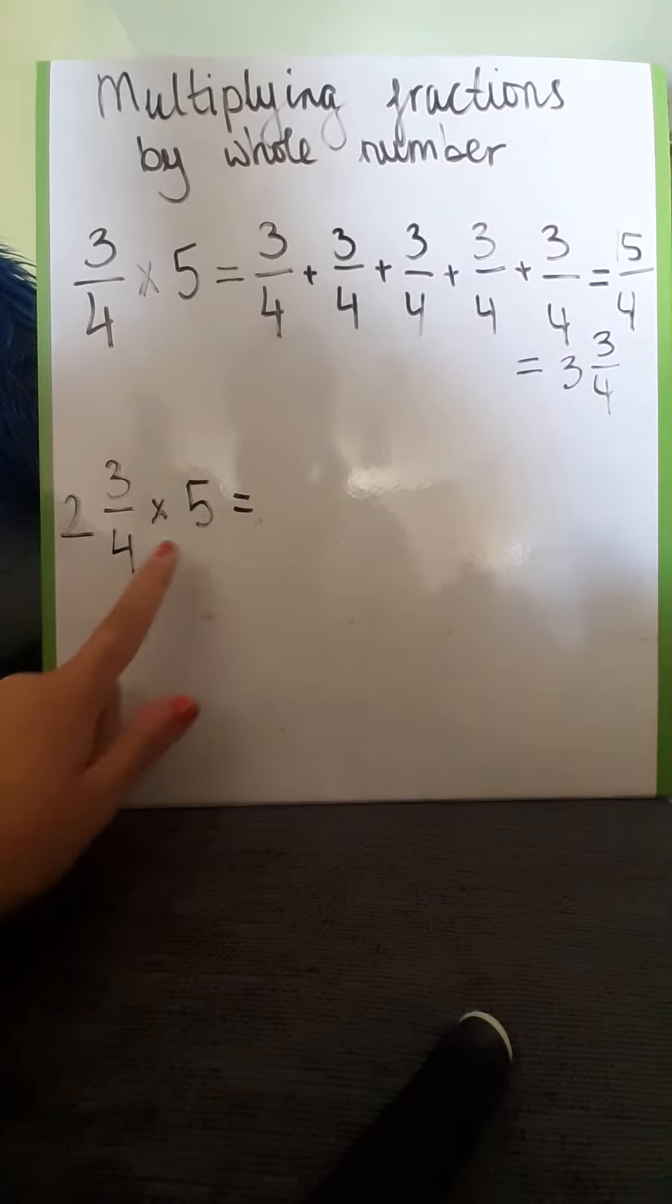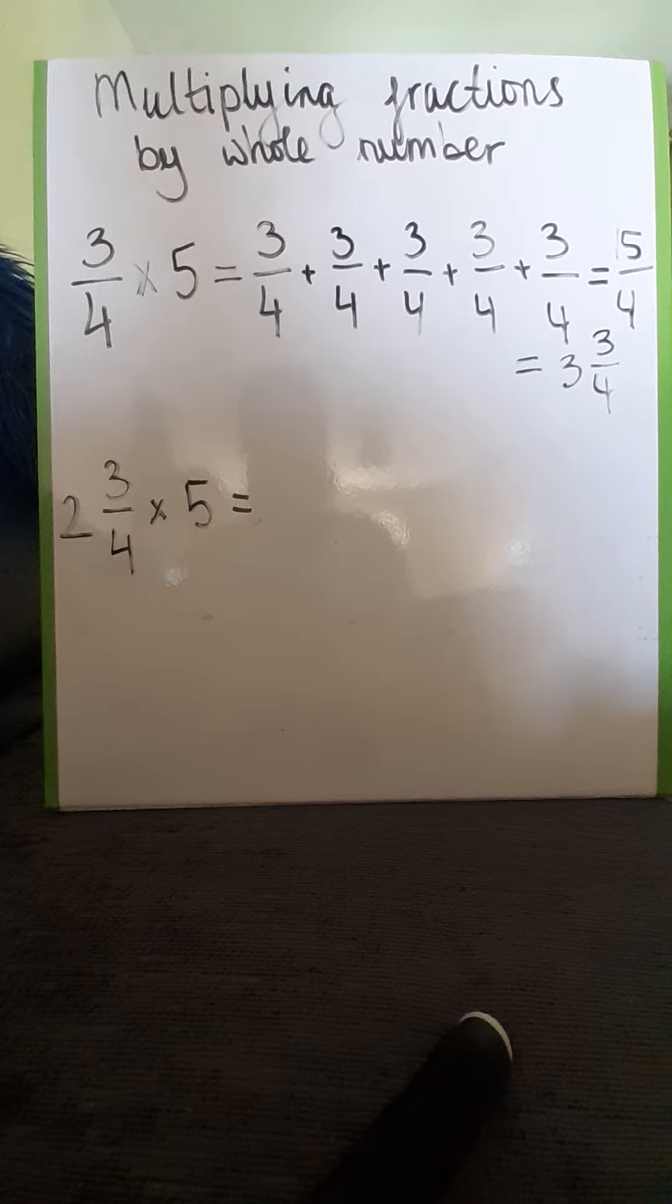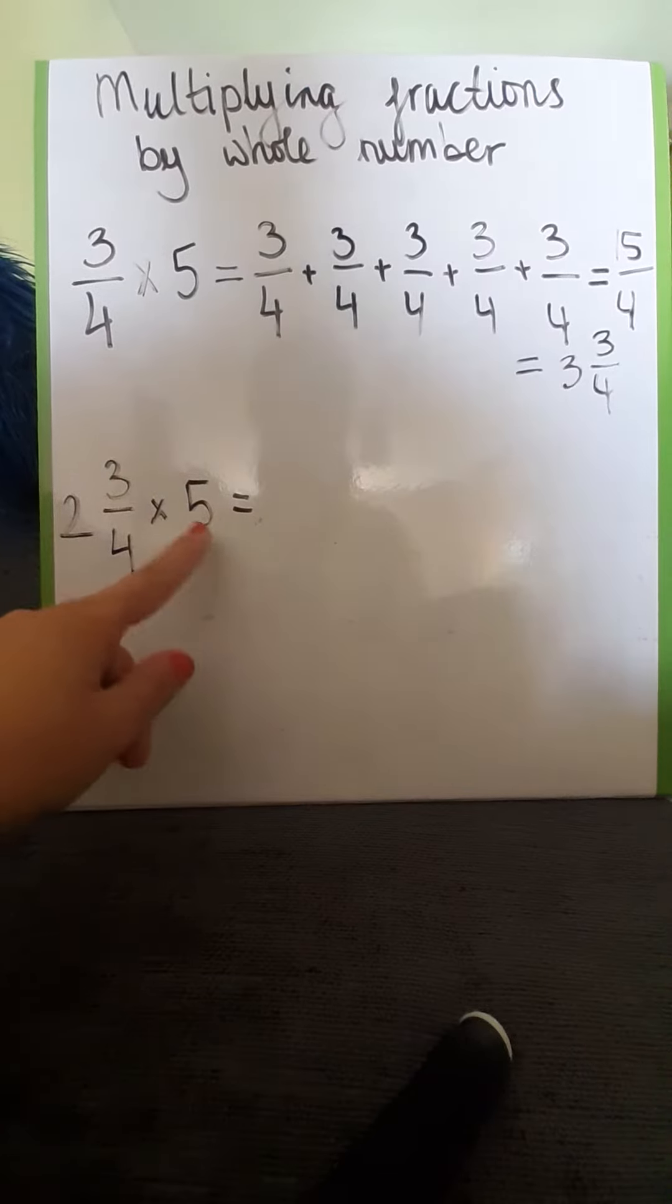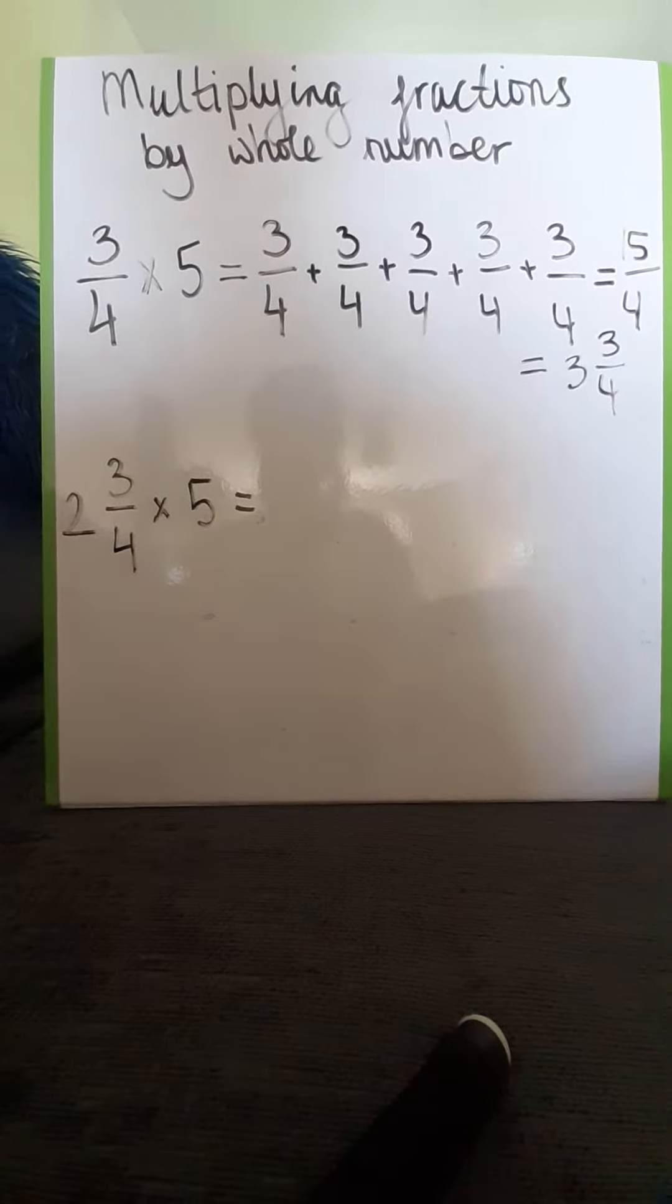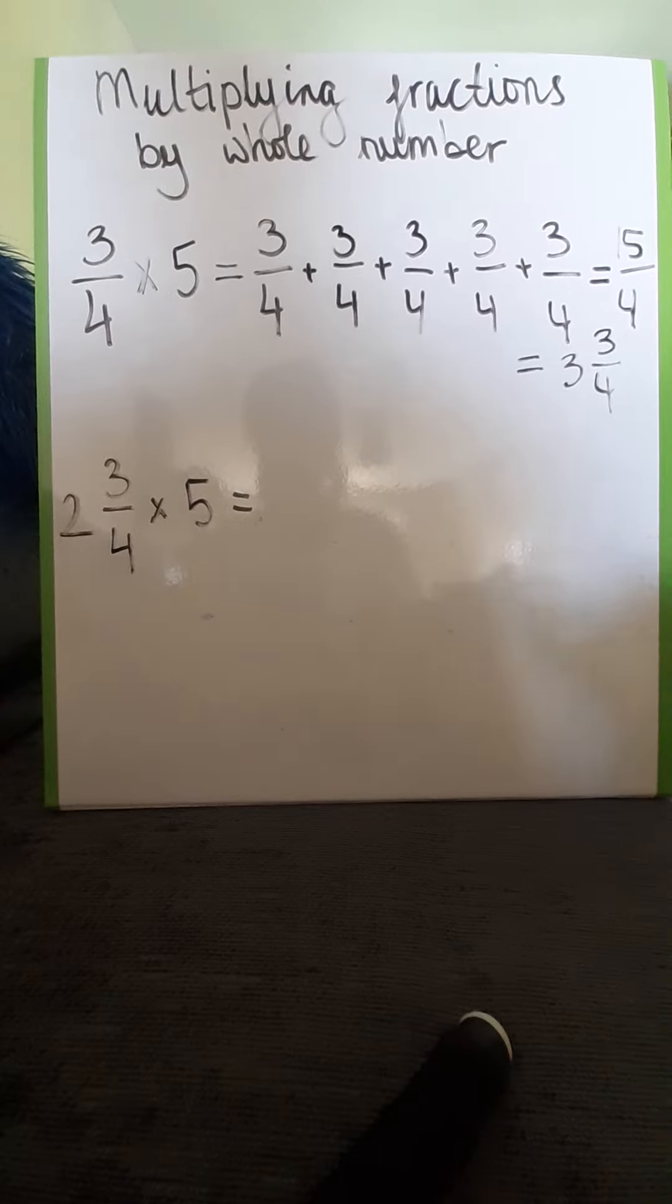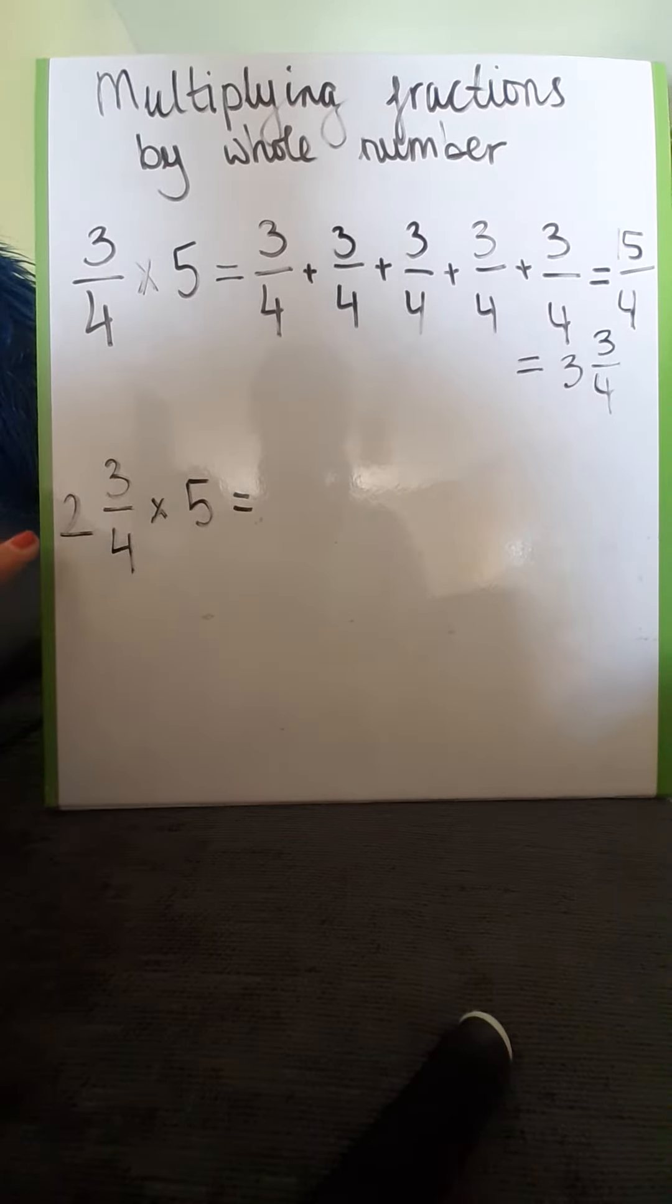Now over here I have a mixed number and I'm trying to multiply that by a whole number, so that's also nice and easy. The first method would be to partition our mixed number into a whole number and a fraction.